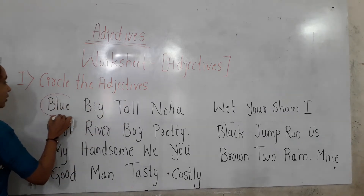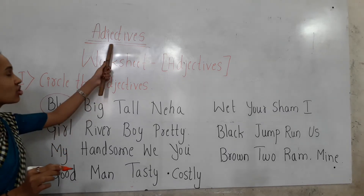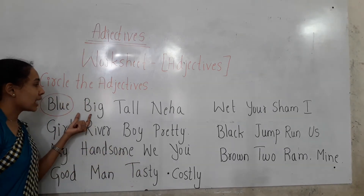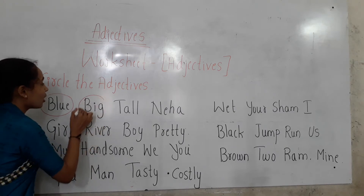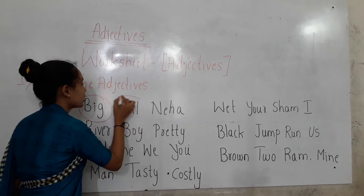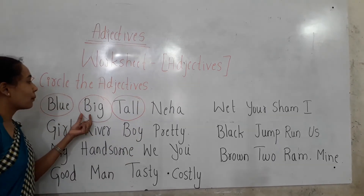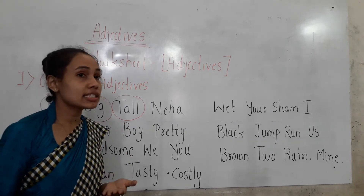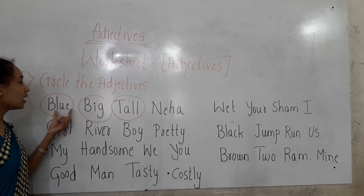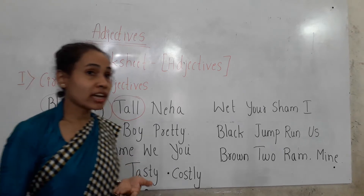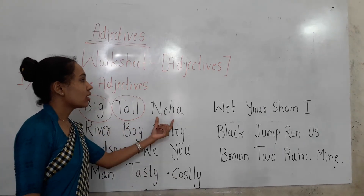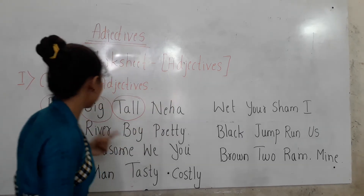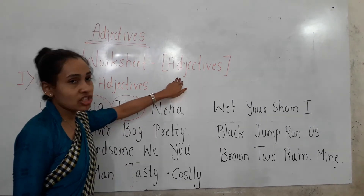Blue is the adjective — it denotes the color of a noun. Big is also an adjective, denoting size. Tall is also an adjective, denoting the size of a noun. So blue, big, and tall are adjectives. Neha is a noun, so it is not an adjective.